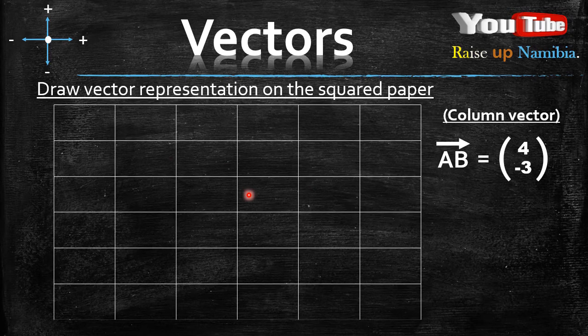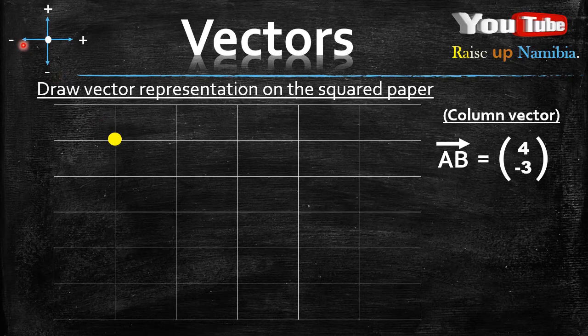The first thing you want to do is find the starting point. You can start wherever you want, so let me choose a starting point here. After you choose your starting point, you want to focus first on the x-axis. What are you given for the x-axis? You are given a positive 4.